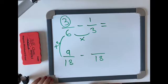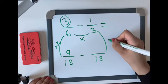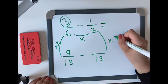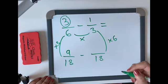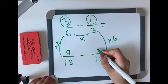So we've done this side and now we need to do the other side. How do I get from 3 to 18? Well, I multiply it by 6. 6 times 3 equals 18. What I do to the bottom, I must do to the top. 1 times 6 equals 6.